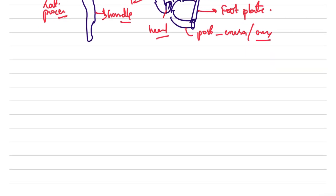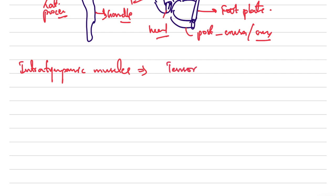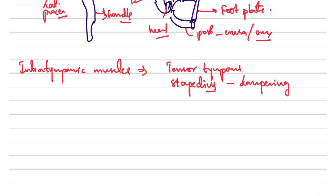We also have the intratympanic muscles. This topic was asked in recent university examinations. There are two muscles: the tensor tympani, and the well-known stapedius muscle, which helps in the dampening of sound.